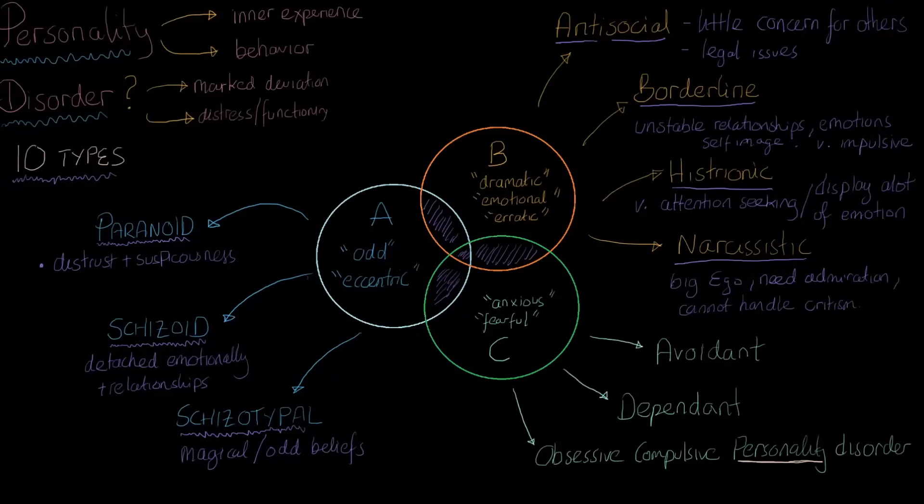Let's start with avoidant. The main issue with people who are avoidant is that they're very inhibited, they feel inadequate, and generally they try to avoid putting themselves in a situation where they can be criticized.